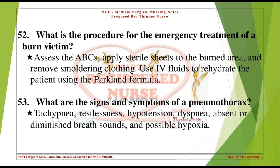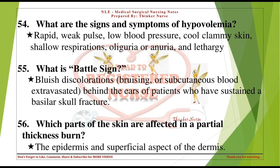What are the signs and symptoms of a pneumothorax? Tachypnea, restlessness, hypotension, dyspnea, absent or diminished breath sounds, and possible hypoxia. What are the signs and symptoms of hypovolemia? Rapid weak pulse, low blood pressure, cool clammy skin, shallow respirations, oliguria or anuria, and lethargy.